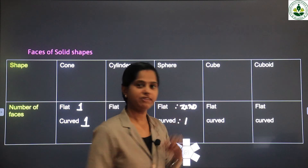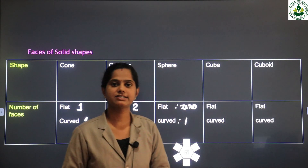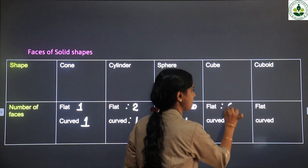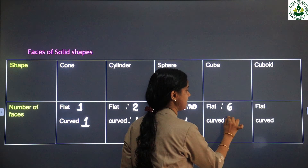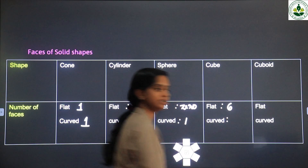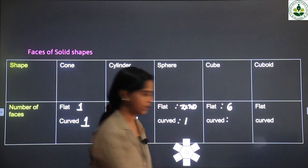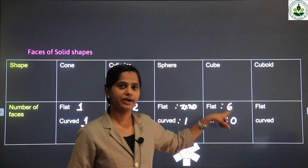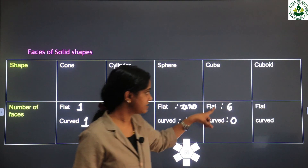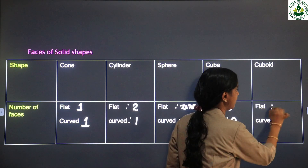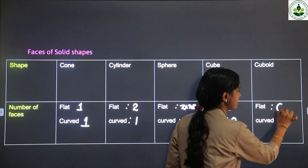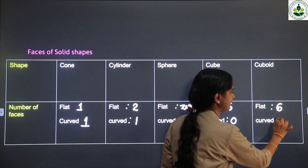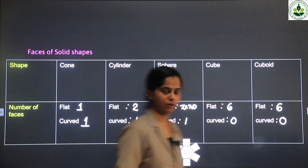Cube — how many flat surfaces? Six flat surfaces, and curved surfaces? Zero. Cuboid — how many flat surfaces? Six flat surfaces, and curved surfaces? Zero.